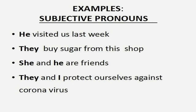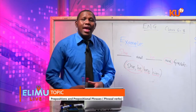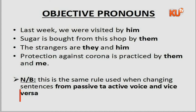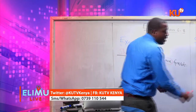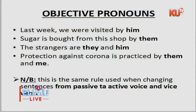Examples of objective pronouns, changing the sentences to passive: Last week we were visited by him — him shows the receiver of the action. Sugar is bought from this shop by them. The strangers are them and him — not they, it should be them. Protection against coronavirus is practiced by them and me. Note: this is the same rule used when changing sentences from passive to active voice and vice versa.